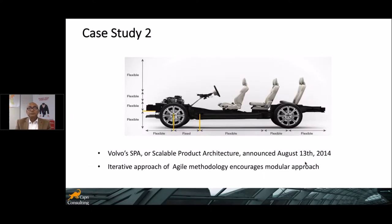Tesla is very secretive about their agile use, so let's look at Volvo's SPA — Scalable Product Architecture — announced in 2014. They've taken an iterative approach to agile methodology to encourage a modular approach. From the diagram, there are flexible and fixed components of the car. Based on fixed and flexible components, they just change the model and the variation of those cars.